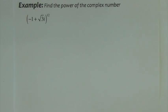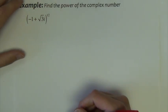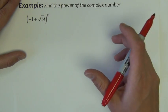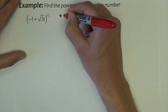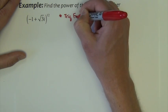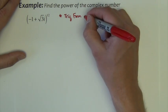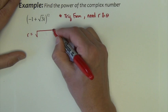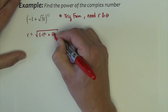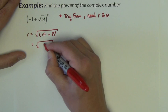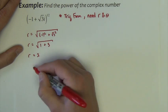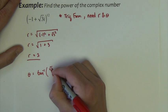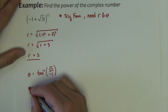This final example asks us to find the 12th power of a complex number — an absolute nightmare to multiply out 12 times. So we'll use De Moivre's theorem, but first we need to put the number in trig form by finding r and theta. The r value comes from the Pythagorean theorem: it's the square root of (−1)² + (√3)², which is the square root of 1 + 3, equal to 2. Theta is the inverse tangent of b over a.